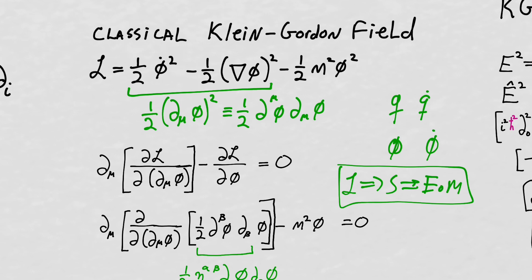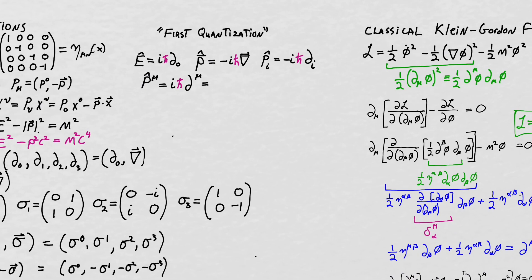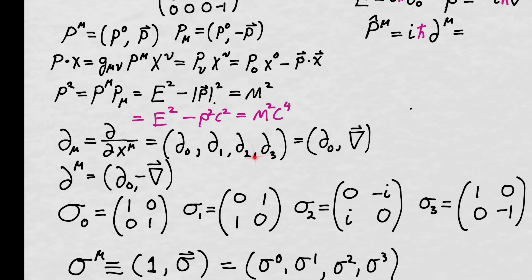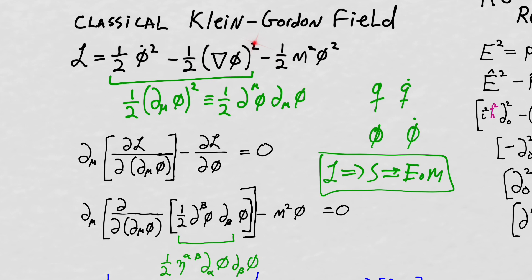We can write this Lagrangian in a covariant way by combining the time derivative and space derivative parts. This gives us one-half (∂^μ φ)(∂_μ φ), or written compactly as one-half (∂_μ φ)². The negative sign on the spatial derivative part comes from contracting the upper and lower index partial derivatives using the metric — the upper index partial derivative carries a negative sign for spatial components.